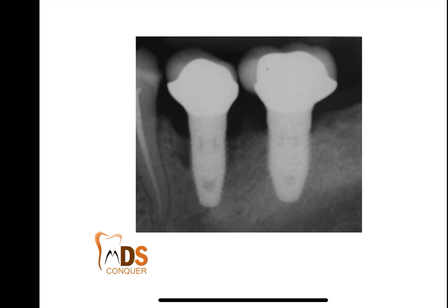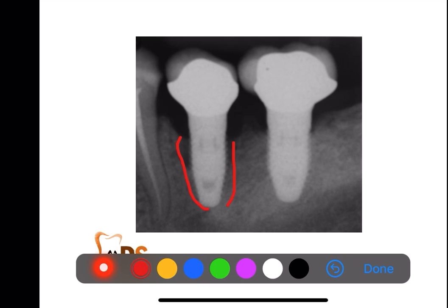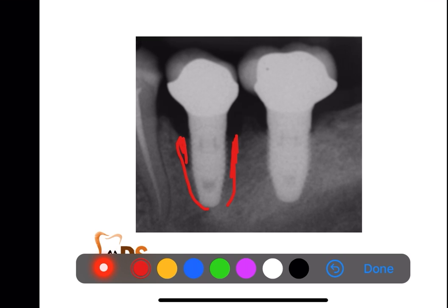Next case: a patient underwent an implant and a few months after placement developed severe pain and discharge of pus from the gingival sulcus. The radiograph shows a radiolucency surrounding that particular implant. This is a simple case of peri-implantitis — inflammation occurring around the implant.